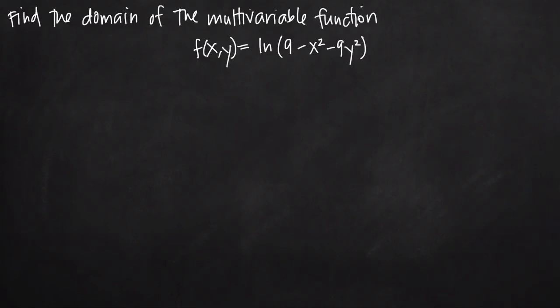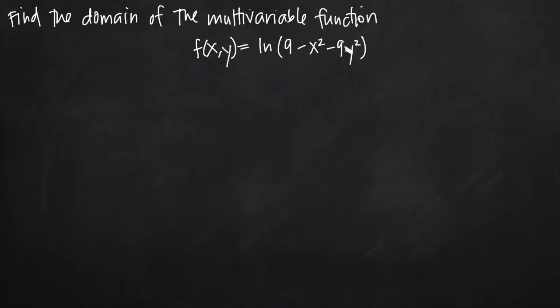Today we're going to be talking about how to find the domain of a multivariable function. In this particular problem we've been given the multivariable function f, or you could also think of this as z, equal to the natural log of the quantity 9 minus x squared minus 9y squared.